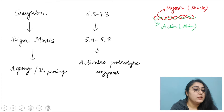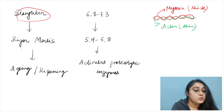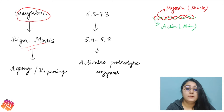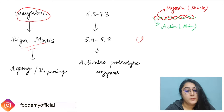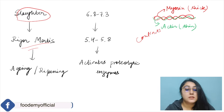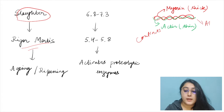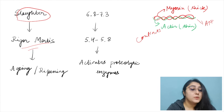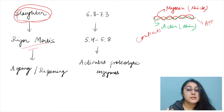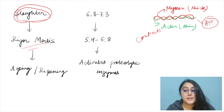Once the animal is slaughtered, it undergoes rigor mortis. Linkages between actin and myosin muscle proteins are formed, causing the muscle to contract. For the muscle to relax, these linkages need to break, which requires ATP.